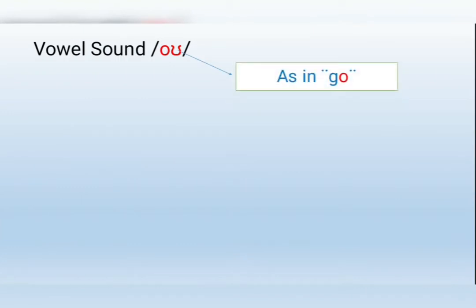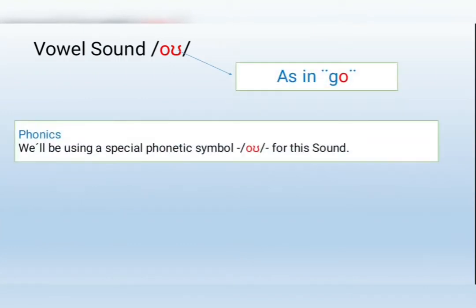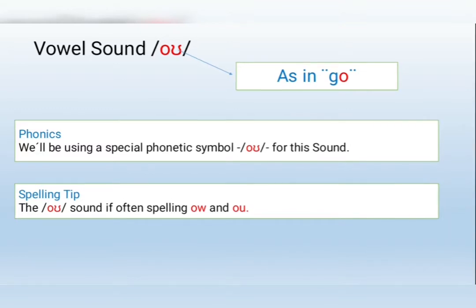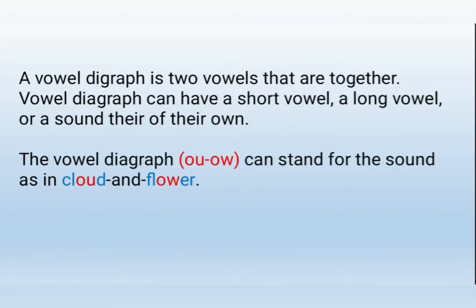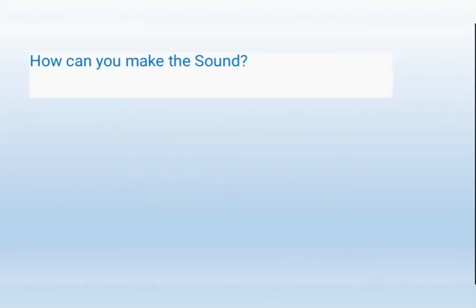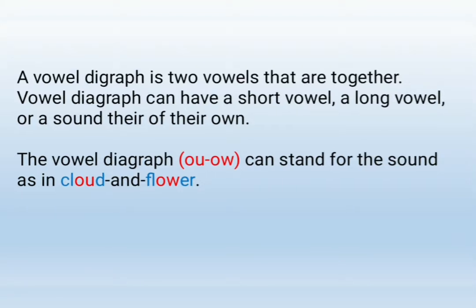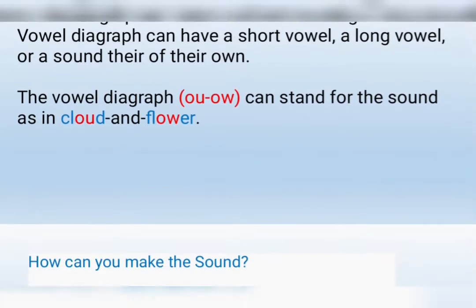The vowel sound O — you can find it in words such as GO. Remember that we'll be using a special phonetic symbol for this sound, and you can also use the OU. A vowel digraph is two vowels that we put together. The vowel digraph can have a short vowel and a vowel or a sound of their own. It's a diphthong that can stand for the sound — for example, in cloud and flower. It's a long vowel.